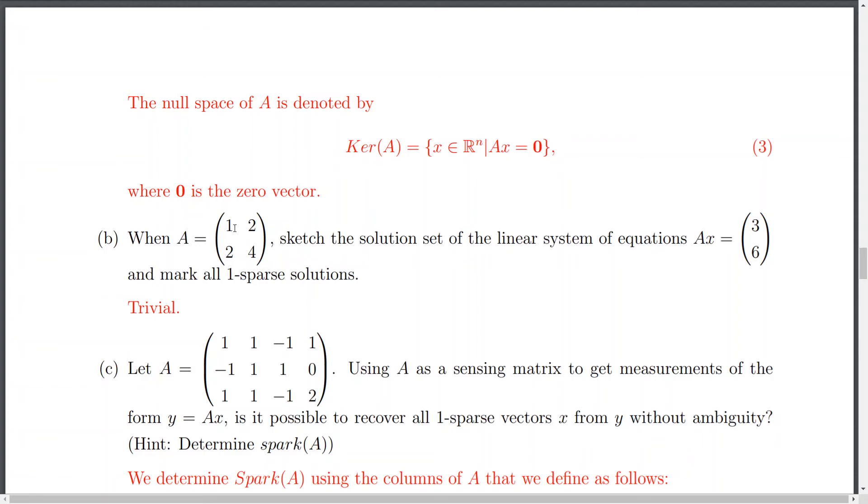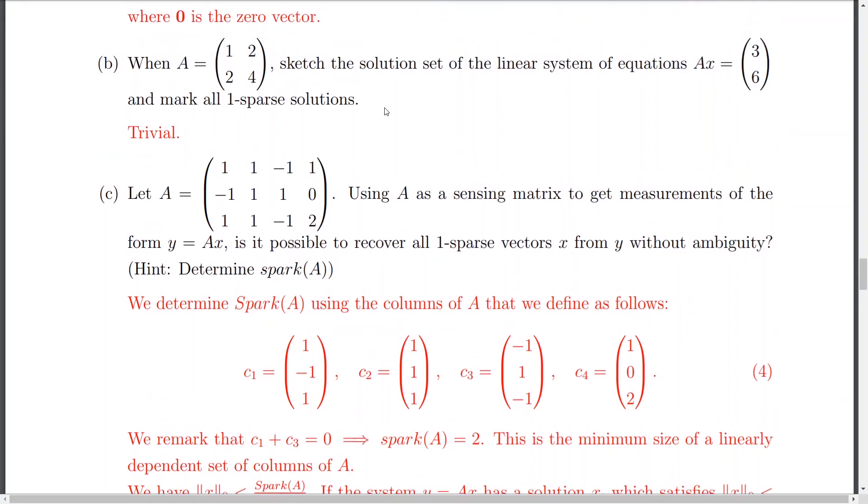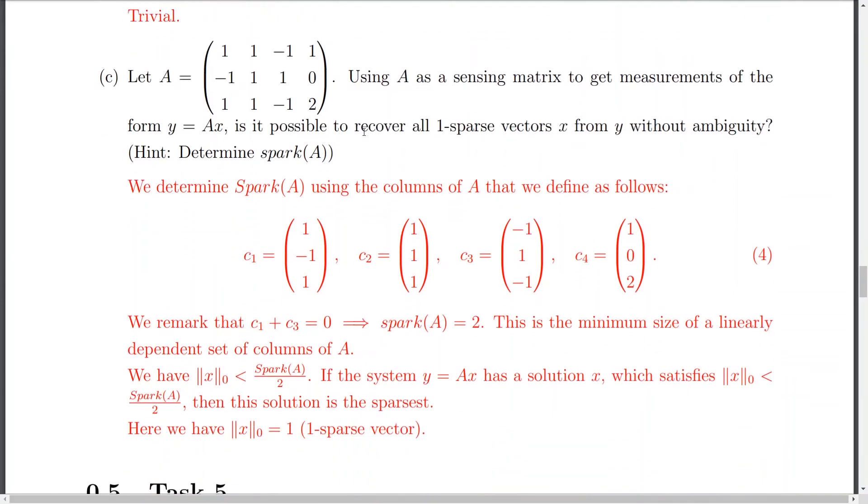So, when A equals this matrix, we need to sketch the solution set of the linear system of the equation A x and mark all one-sparse solutions. So, I think the solution is really trivial here to calculate and you can already notice that the first column, sorry, the second column is nothing than like a multiplication of the first column by two. So, that's how we obtain sparse solutions. But, it could be maybe a good idea for those who didn't do any matrix multiplication for some time to refresh a little bit.